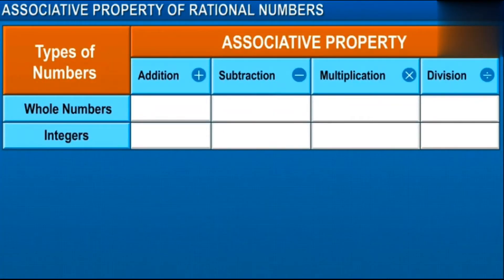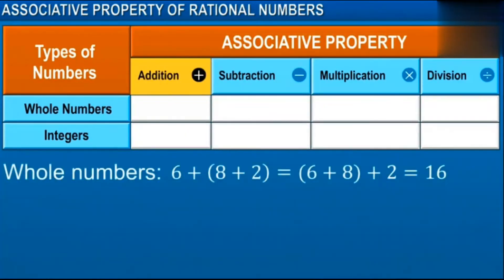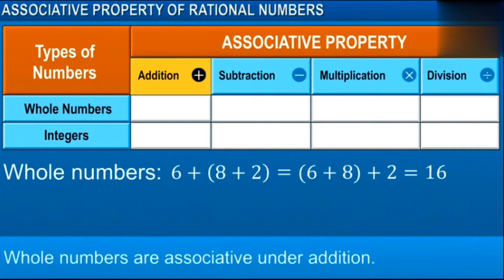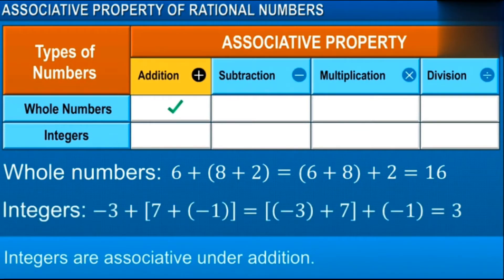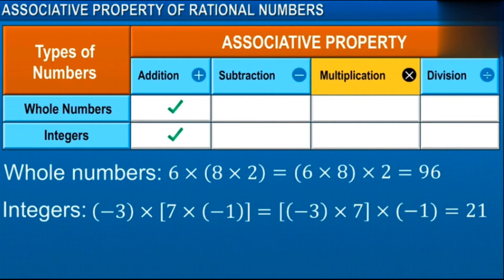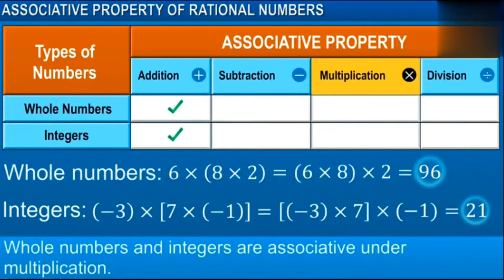Let's first check the associativity of whole numbers and integers under addition. Notice that on rearranging the whole numbers 6, 8, and 2 in a different order, the result is 16. Thus, we can say that whole numbers are associative under addition. Similarly, integers are associative under addition. Whole numbers and integers are also associative under multiplication.